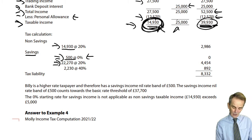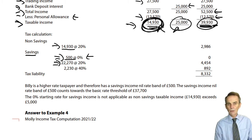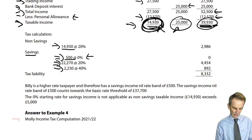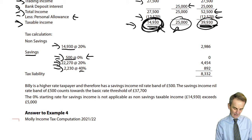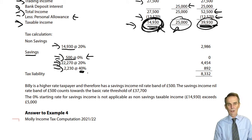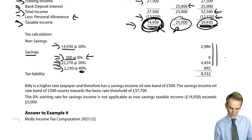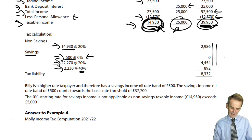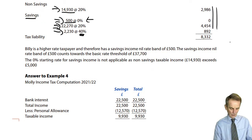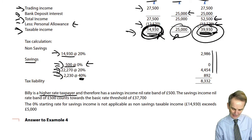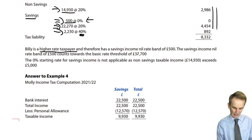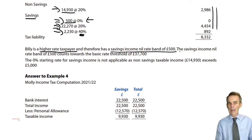So it pushes £2,230 of your total £25,000 worth of taxable savings income out of the basic rate band and up into the higher rate band, where we're talking about a 40% tax charge. Billy is a higher rate taxpayer because that taxable income figure exceeds £37,700, and because there is savings income, a savings income nil rate band of £500 will be available.